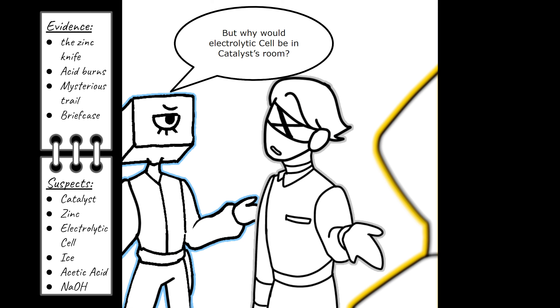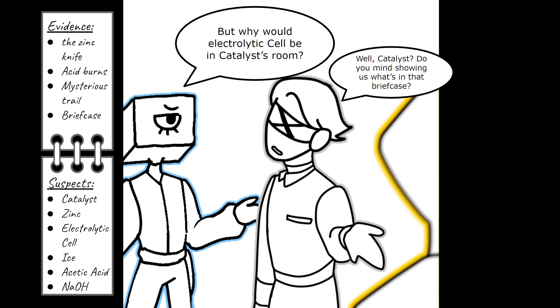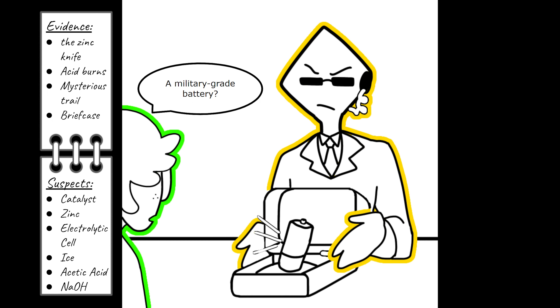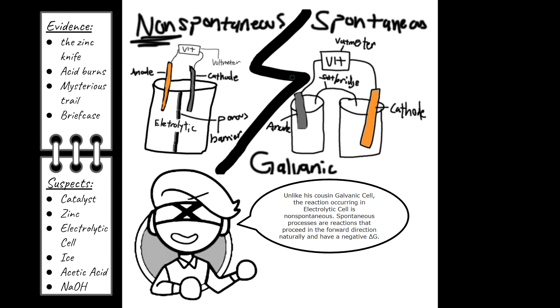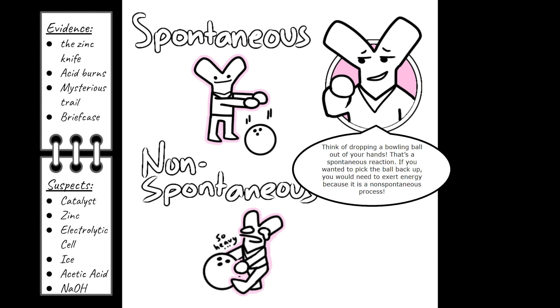But why would an electrolytic cell be in Catalyst's room? Well, Catalyst, do you mind showing us what's in that briefcase? A military-grade battery? Unlike his cousin Galvanic cell, the reaction occurring in an electrolytic cell is non-spontaneous. Spontaneous processes are reactions that proceed in the forward direction naturally and have a negative delta G. However, when a reaction is non-spontaneous, it is the exact opposite. It has a positive delta G and will not proceed in the forward direction easily. Think of dropping a bowling ball out of your hands. That's a spontaneous reaction. If you wanted to pick the ball back up, you would need to exert energy because it's a non-spontaneous process. And that's why electrolytic cell needs a battery to power his reaction.